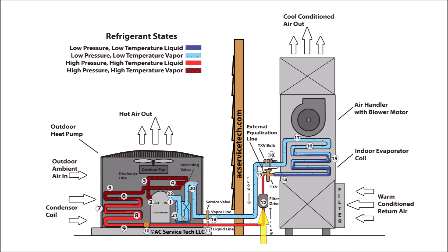In step twelve, you have the subcooled liquid entering the filter dryer. The filter dryer's job is to trap any debris and water. It has a limited capacity due to its size in order to absorb water, and the refrigerant remains in the subcooled liquid state. After the refrigerant exits the filter dryer, the high pressure, high temperature liquid refrigerant enters the metering device at step thirteen.